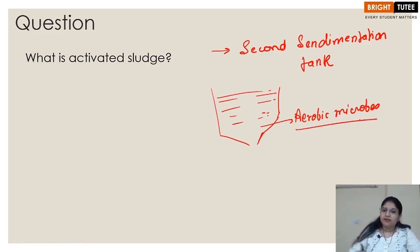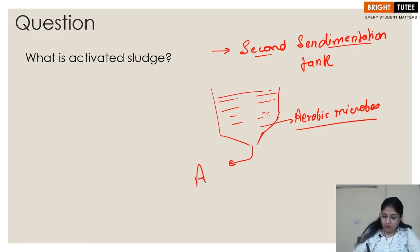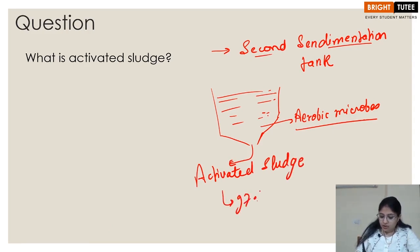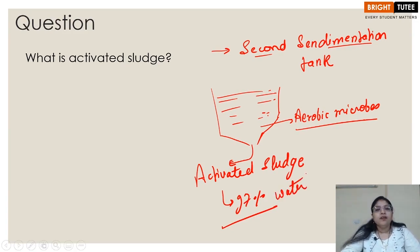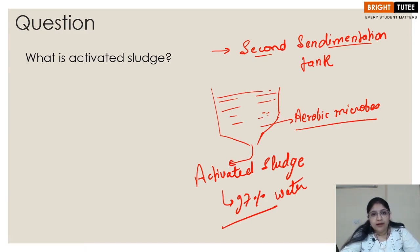The settlement that happens in the second sedimentation tank is removed as activated sludge. This activated sludge contains 97 percent water, which is dried off, and then it is used as manure in the fields.